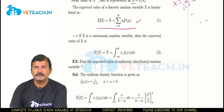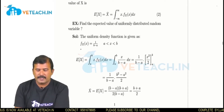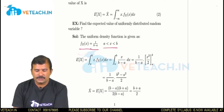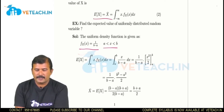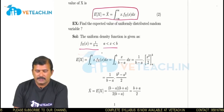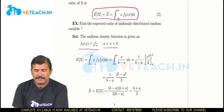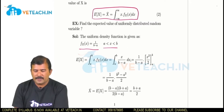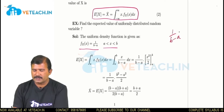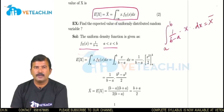Let us see one example: find the expected value of a uniformly distributed random variable. The uniform density function is f_X(x) = 1/(b−a), where x lies between a and b. The expected value of a continuous random variable is the integral from minus infinity to infinity of x times f_X(x) dx. Since the uniform density function exists only between a and b, the expected value becomes the integral from a to b of x times (1/(b−a)) dx. Since 1/(b−a) is a constant, we integrate x from a to b, giving (1/(b−a)) times [x²/2] from a to b.